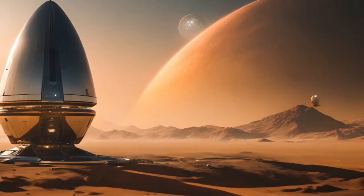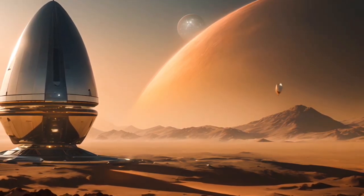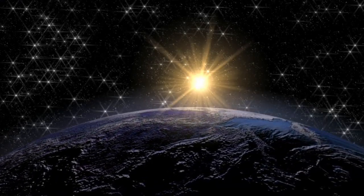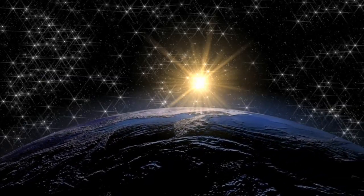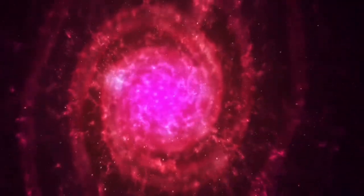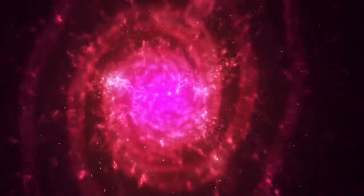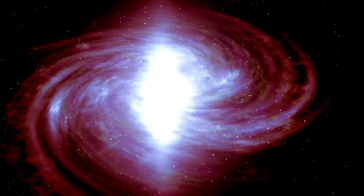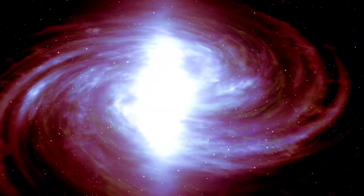The next step, assuming Proxima Centauri b has an atmosphere, will be to examine its chemical composition to see if it could support life. The presence of elements like oxygen, methane, and water vapor would suggest that life could exist on the planet.